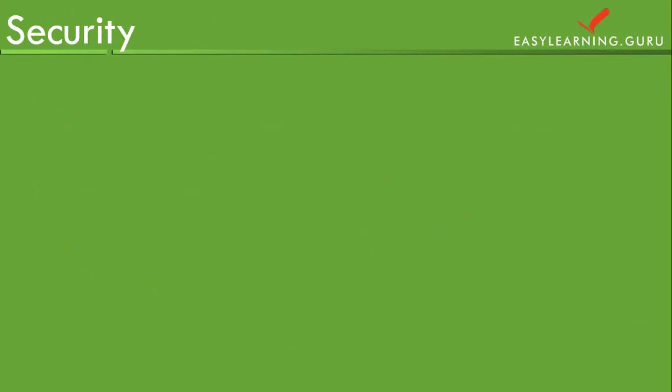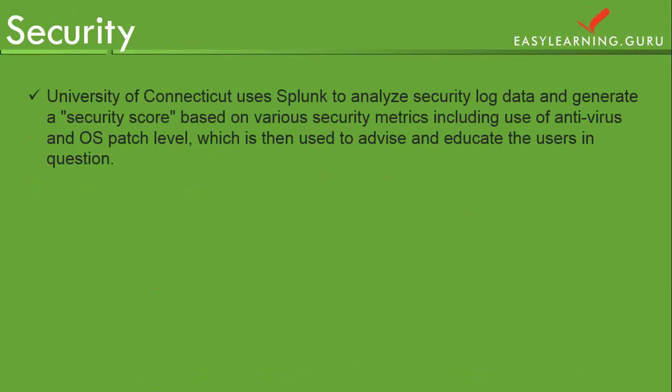Splunk also ensures data security, as it has access control methods to secure your data. It has various permissions available for particular users to allow which data can be accessed by them. The University of Connecticut uses Splunk to analyze security log data and generate a security score based on various security metrics, including use of antivirus and OS patch level, which is then used to advise and educate the user in question.